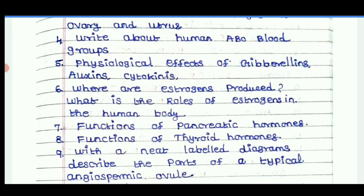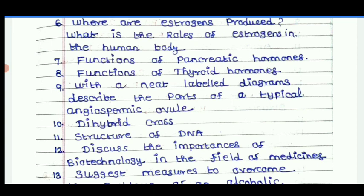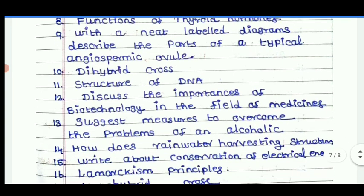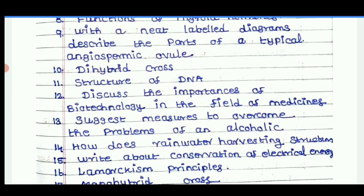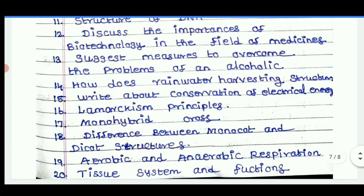Where are the estrogens produced? What are the roles of estrogen hormones in the body? Function of pancreatic hormones. Functions of thyroid hormones. Write a neat labelled diagrammatic description of parts of a typical angiosperm ovule — very important. Dihybrid cross. Structure of DNA. Discuss the importance of biotechnology in the field of medicine. Suggested measures to overcome problems in alcoholics. How does rainwater harvesting work and its structure? Write about the conservation of electrical energy. Lamarckism principles. Monohybrid cross. Difference between monocot and dicot structure. Aerobic and anaerobic respiration — respiratory differences. Tissue system and functions.